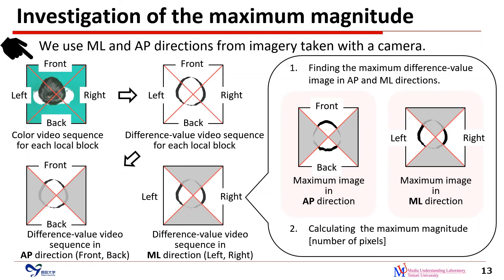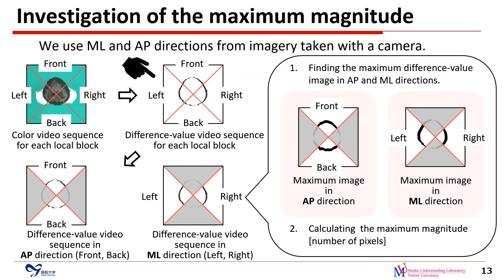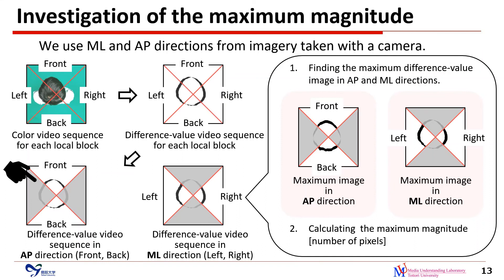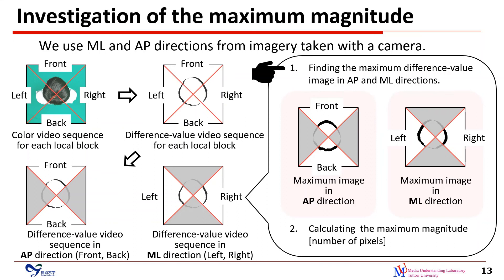We explained the method for extracting the maximum magnitude of body sway using ML and AP directions from imagery taken with a camera. First, we record a color video sequence for each local block. Next, we create a difference-value video sequence for each local block. Then, we acquire the difference-value video sequence in AP and ML directions. AP direction is determined by the front block and the back block. ML direction is determined by the left block and the right block. Finally, we find the maximum difference-value image in AP and ML directions and calculate the maximum magnitude.